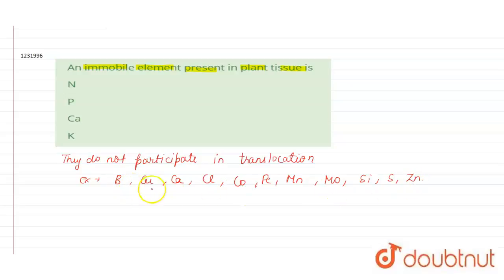So here is a big list of immobile elements which do not participate in translocation. They are static. They just accumulate at the absorbed site. So here we have calcium in our options. That is, the third option is the correct answer here.